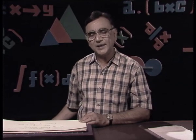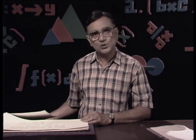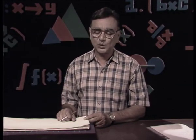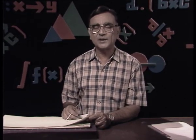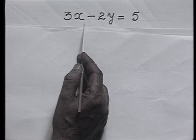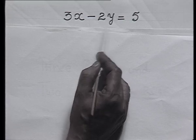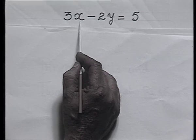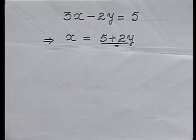Whenever we have a linear equation in two variables, the question arises as to how to solve it. There can be many solutions because there are two variables, so both variables will get some value. For the equation 3x minus 2y equals 5, by giving any arbitrary value to either x or y, I can get the corresponding value of the other one. If I give some value to x, I will get the value of y, and if I give a value to y, I can get the value of x.